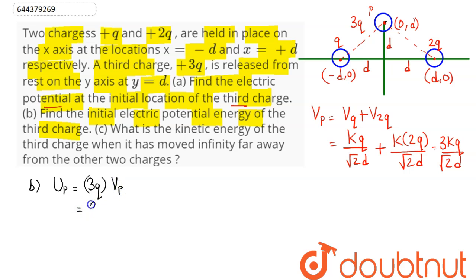So, this comes as 3q into potential at point P, we have here as 3kq divided by root under 2d. So, this comes as 9kq square divided by root under 2d. This is our second part answer.